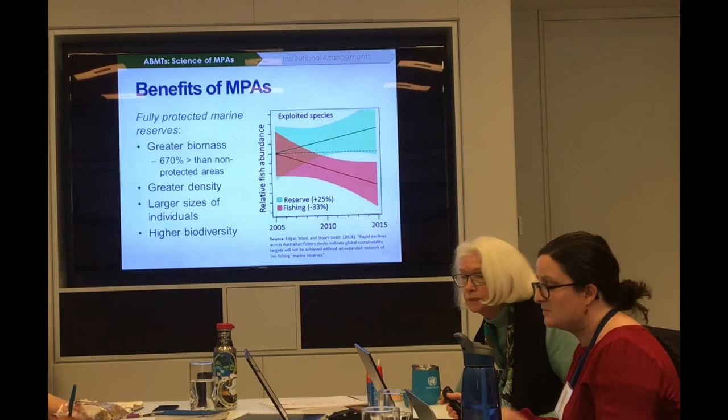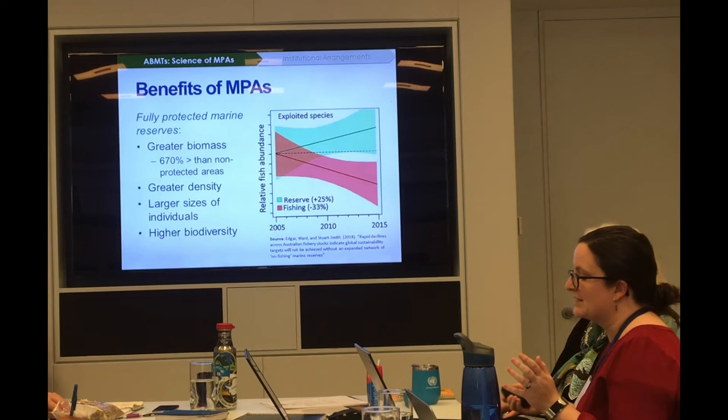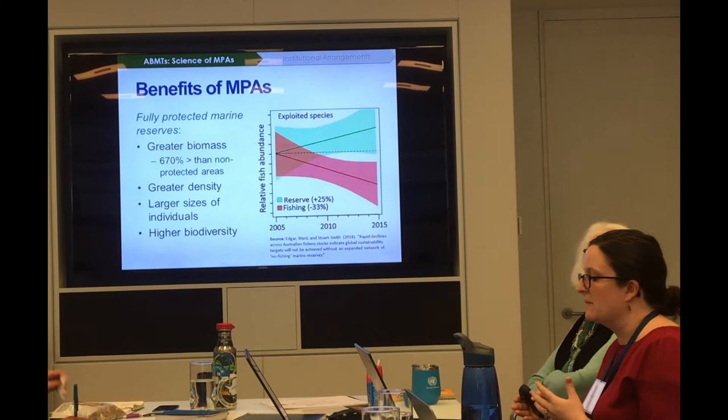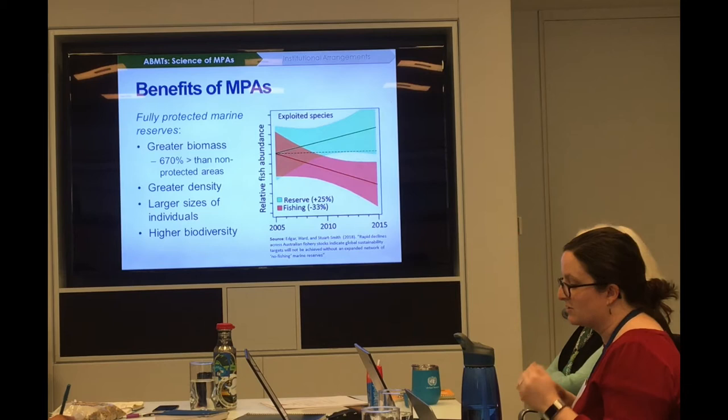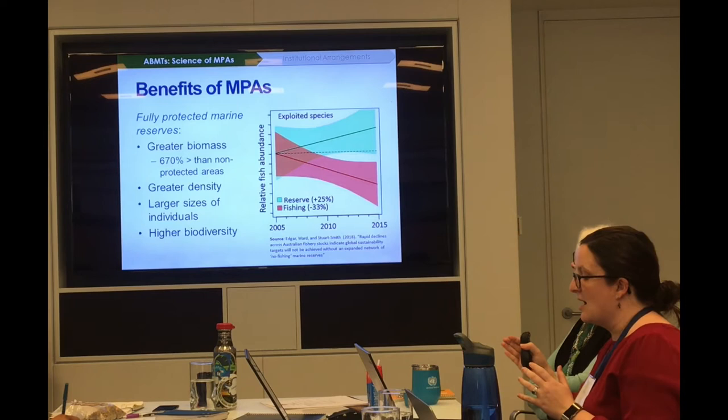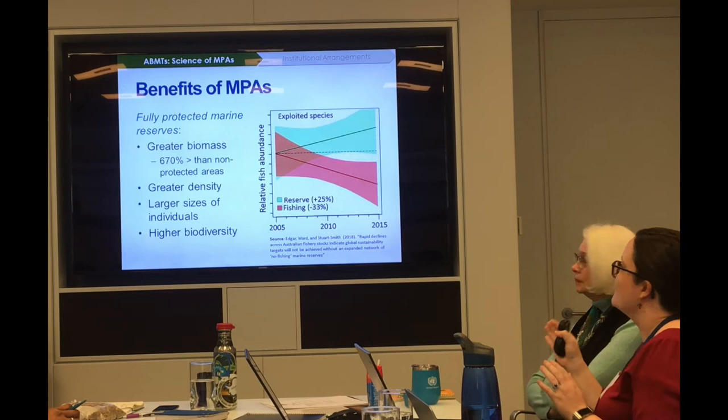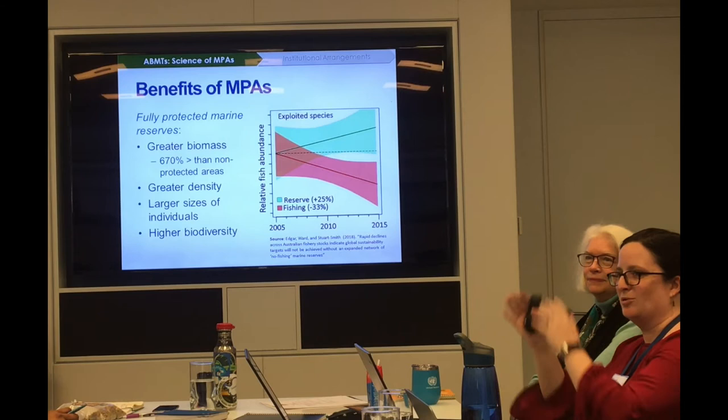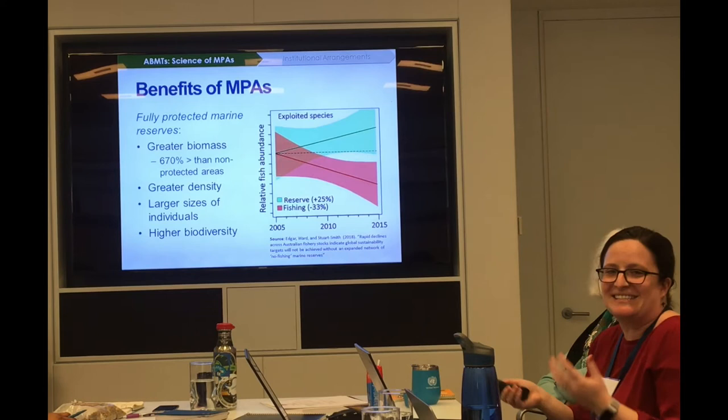Looking at fish abundance in Australia — with global implications — exploited species within a marine reserve increased 25% in abundance, while abundance outside the reserve decreased by 33%. This is a graph I often use for presentations to government officials: green is good — increase — red is decrease, bad. Nothing new for this audience, but useful to show.